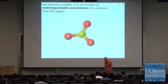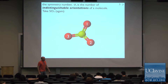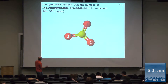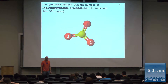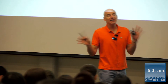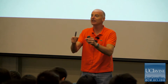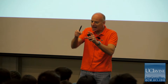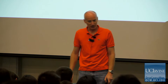We were talking about the symmetry number on Friday. This is a confusing topic and it isn't discussed very much in your book. All it is is the number of indistinguishable orientations of a molecule. For simple molecules you don't need any fancy thought process — you can just take the molecule, label the atoms, turn it around, and figure out how many indistinguishable orientations there are.